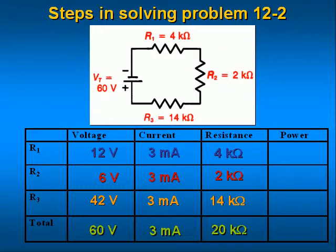Now let's look at power. First we compute the power supplied to the circuit by the 60 volt power supply. Power equals voltage times current, so we multiply 60 volts times 0.003 amps to get 0.18 watts or 180 milliwatts.